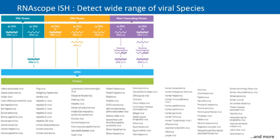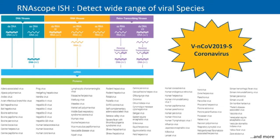RNA Scope has the ability to detect a wide range of viral species, including DNA viruses, RNA viruses, and retrotranscribing viruses, all detectable as both double-stranded or single-stranded families. For today's review, we will be focusing on the group 4, or single-stranded RNA positive strand virus family.